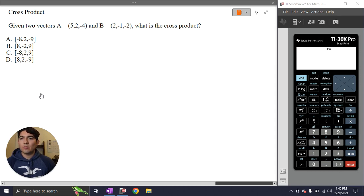For this first one, we are given a cross product problem. It says given two vectors, A and B, what is the cross product? So over here, I have my calculator on the right. The first thing we're going to do is hit second and then vector to go to our vector operations part of the calculator.